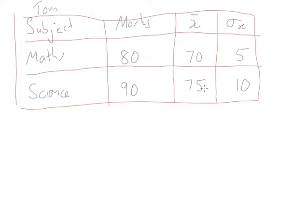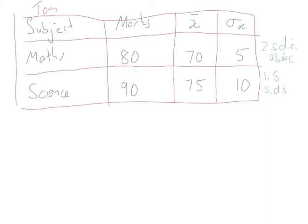In maths, the mean is 70 and Tom got 80 — that's 10 marks above the mean. With a standard deviation of 5, that's 2 standard deviations above the mean. In science, Tom is 15 marks above the mean (mean 75, score 90), and with a standard deviation of 10, that's only 1.5 standard deviations above the mean. Being 2 standard deviations above the mean means he's beaten more people in maths than in science — even though his maths mark looks lower on the surface. Because it's a harder test with scores more bunched, his 2 standard deviations above tells us he performed better in maths than in science.